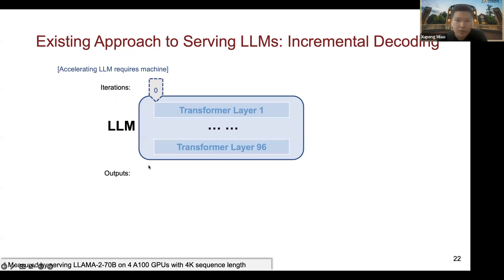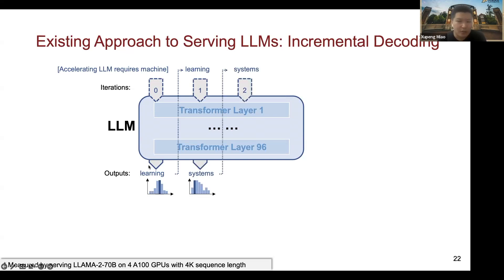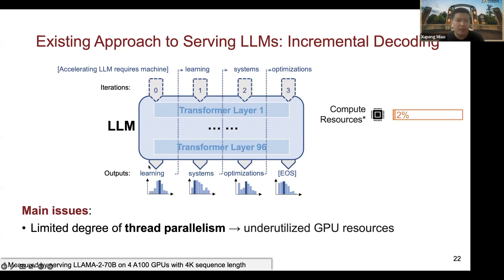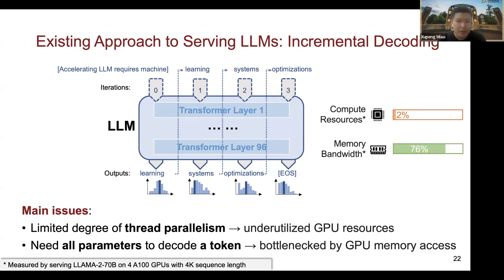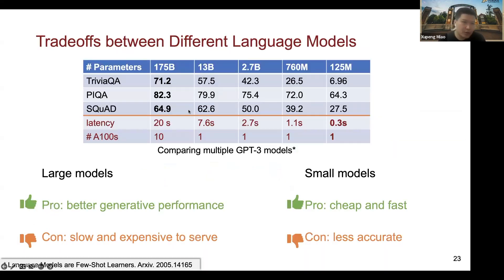The main performance bottleneck of LLM serving comes from the incremental decoding algorithm, where each decoding step only generates a single output token using the input prompt and all previously generated tokens. During each step's calculation, most operators involve a product between a small token vector and the model weight matrix, making it very hard to fully utilize GPU compute resources. The incremental decoding approach also requires accessing all model parameters and the KV cache to decode a single token, making the process highly memory-bounded.